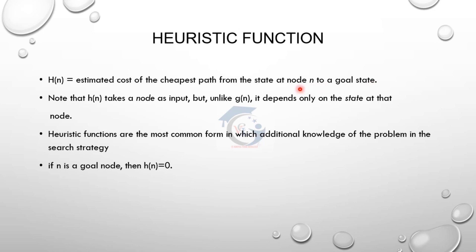From the current state, the next state is evaluated using h(n). If h(n) is the value of the current state, and we look at uniform cost search, two nodes of the same weight give us g(n). Heuristic functions provide additional knowledge to solve the problem effectively. In informed search strategies, we use the heuristic function value h(n). If n is the goal node, then h(n) is equal to 0.